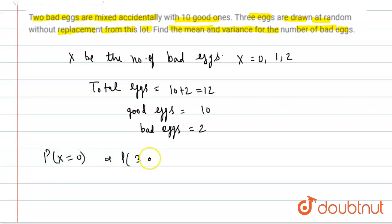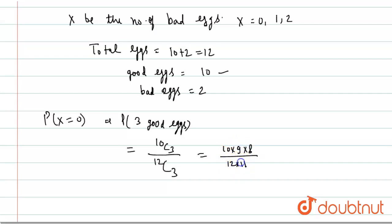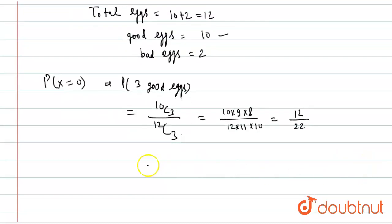P(X = 0) means all 3 drawn eggs are good. This equals 10C3 divided by 12C3 — selecting 3 good eggs from 10, out of 12 total. This is equal to (10 × 9 × 8) / (12 × 11 × 10), which equals 12/22.